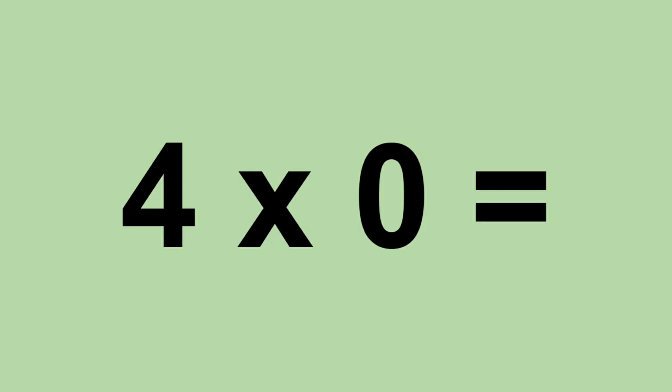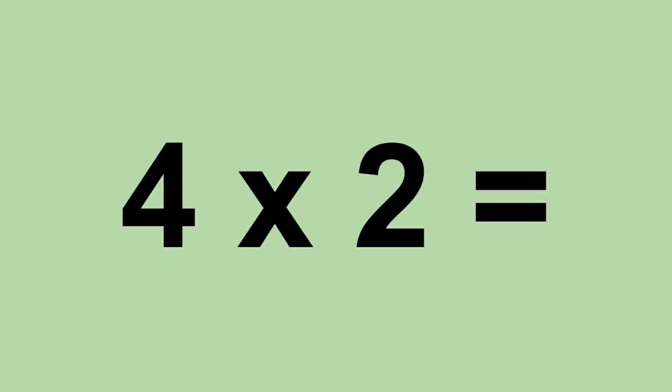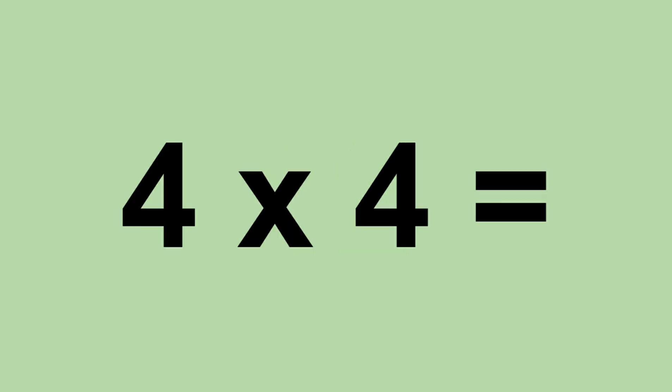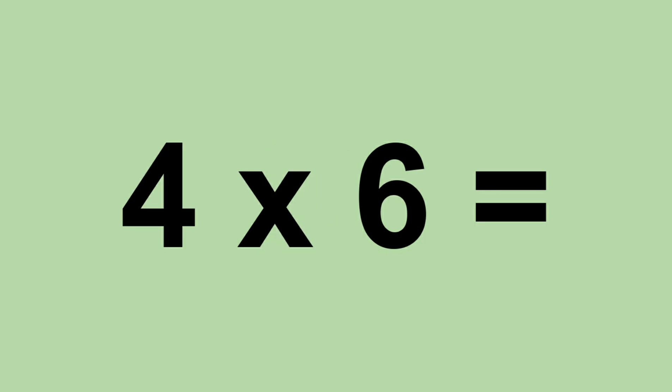4 times 0 equals 0. 4 times 1 equals 4. 4 times 2 equals 8. 4 times 3 equals 12. 4 times 4 equals 16. 4 times 5 equals 20. 4 times 6 equals 24. 4 times 7 equals 28.